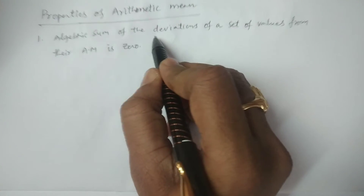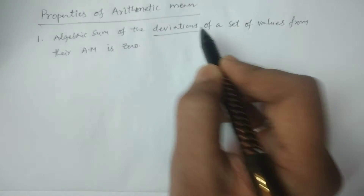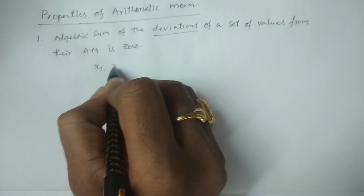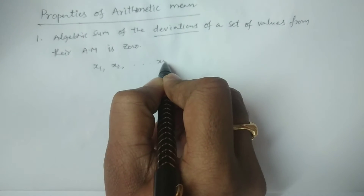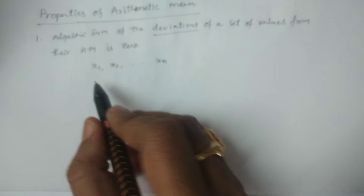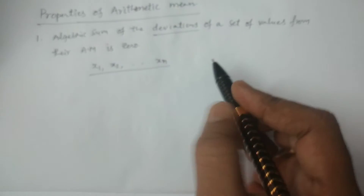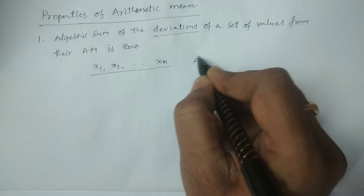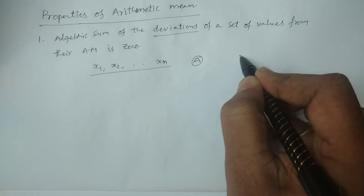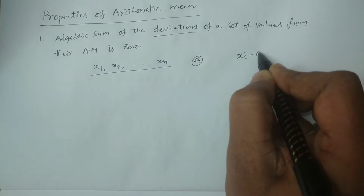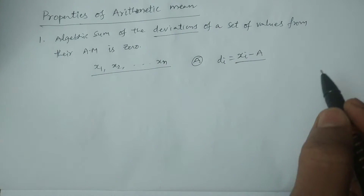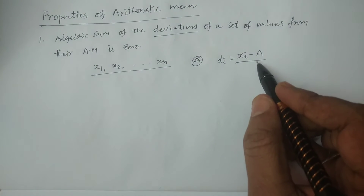First of all, what is deviation? Deviation means, for example, if x1, x2 and so on, xn are the observations, then deviation — if you consider a as an arbitrary point, the deviation is xi minus a. So generally we call it di. di is equal to xi minus a. This is called deviation.